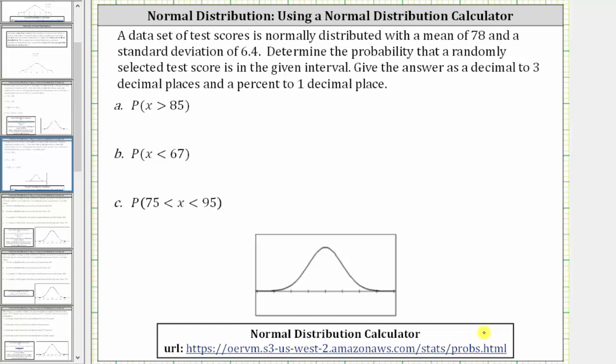A data set of test scores is normally distributed with a mean of 78 and a standard deviation of 6.4. Determine the probability that a randomly selected test score is in the given interval. Give the answer as a decimal to three decimal places and a percent to one decimal place.